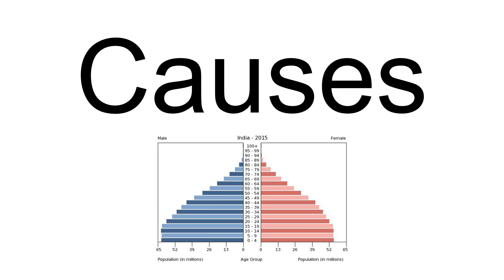Population momentum is typically caused by a shift in a country's demographic transition. When mortality rates drop, the young survive childhood and the aging population lives longer. Fertility rates remain high, causing the overall population size to grow. According to population momentum, even if high fertility rates were immediately replaced with replacement level fertility rates, the population would continue to grow due to the pre-childbearing population entering childbearing years.